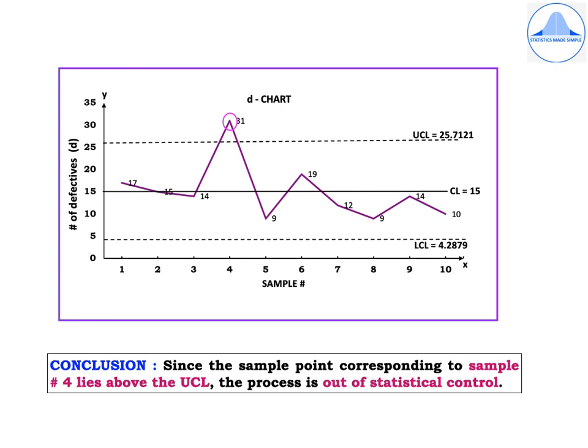Since the sample point corresponding to sample number 4 lies above the UCL — outside the 3-sigma control limits — the process is said to be out of statistical control.